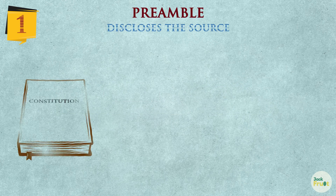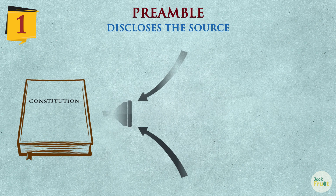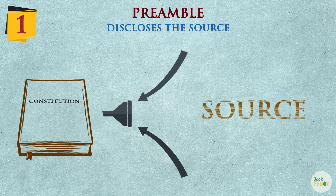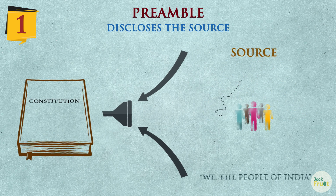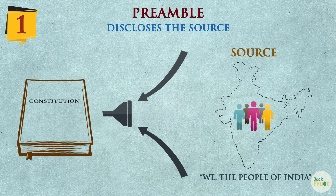1. It discloses the source of the Constitution. It starts with 'We the people of India.' It says that the people enacted the Constitution for themselves.